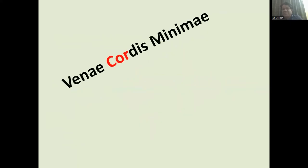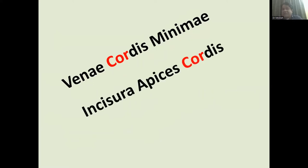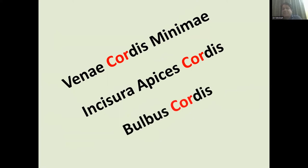Starting with 'cor': the tiny minute veins present in the wall of the heart are called 'venae cordis,' where 'cordis' means heart. Another structure, 'incisura apicis cordis,' refers to a slight indentation near the apex of the heart. And in developmental anatomy, the primitive heart tube has a dilated upper end known as the 'bulbus cordis' — the bulb-shaped portion of the heart.